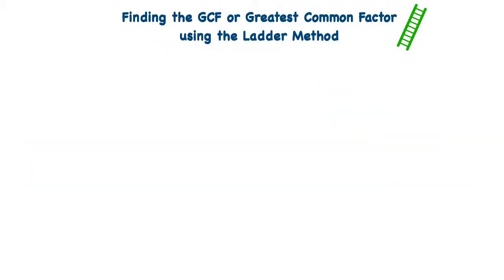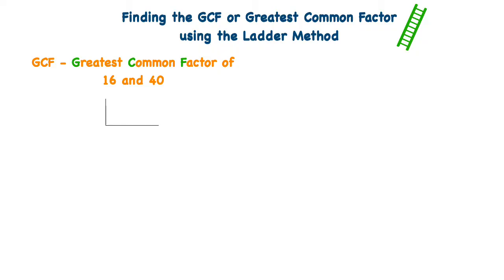So let's get started finding the Greatest Common Factor using the ladder method. We're going to start off by looking for the Greatest Common Factor of 16 and 40. What we do is start off by drawing an L, and inside the L we put the numbers 16 and 40. Then to the left of the L, on the outside, we write a shared factor of both 16 and 40, which would be the number 4.